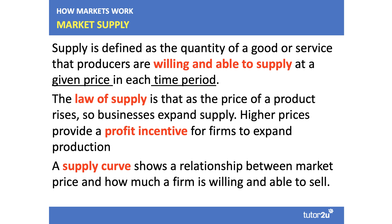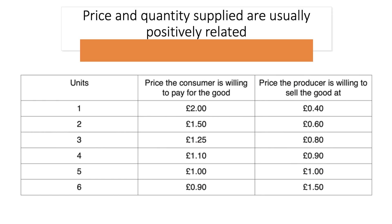A supply curve shows a relationship between the market price and how much a firm is willing and able to sell. Price and quantity supplied are usually positively related. If we think about this simple table, the quantity that producers are willing and able to sell goes up as the price goes up. They might be only willing to sell one unit at 40 pence, but four units at 90p and six units at £1.50, because they're going to get a higher revenue and profit from selling more.